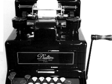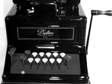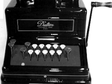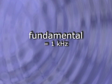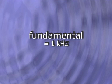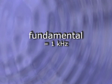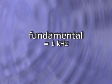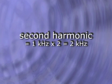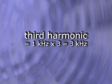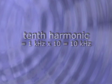There's an easy way to calculate the frequency of any overtone in a harmonic overtone series. Suppose that the fundamental, the first harmonic, is 1 kHz. To find the frequency of any other harmonic, simply multiply the fundamental frequency by the harmonic number. That would make the second harmonic 2 kHz, the third harmonic 3 kHz, the tenth harmonic 10 kHz, and so on.